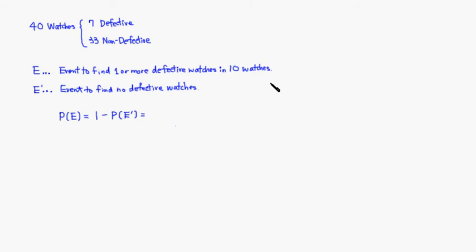So instead of looking at that, we're going to look at its complement. The complement is the event to find no defective watches. Then if you want to find the probability of the original event, all you have to do is subtract the probability of the complement from one.